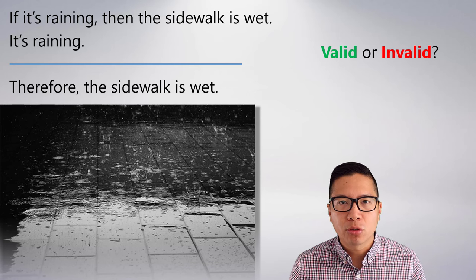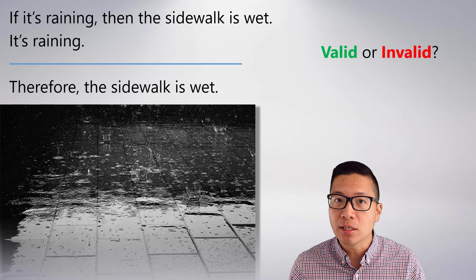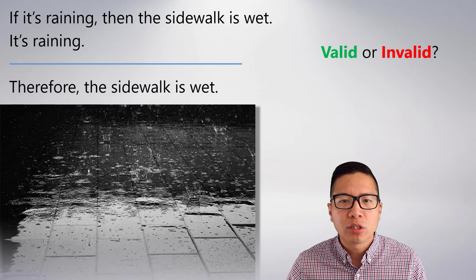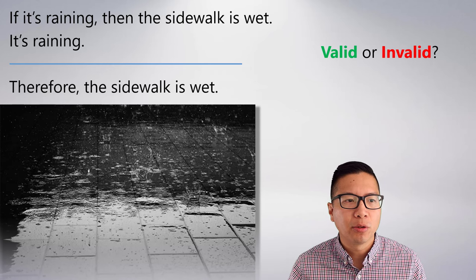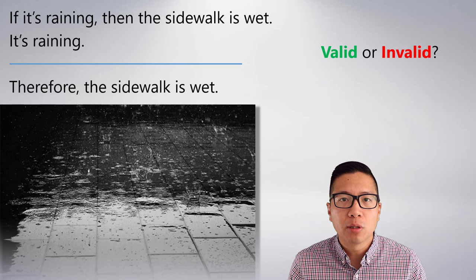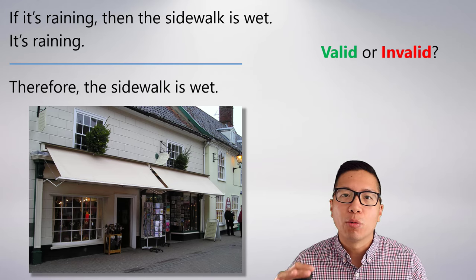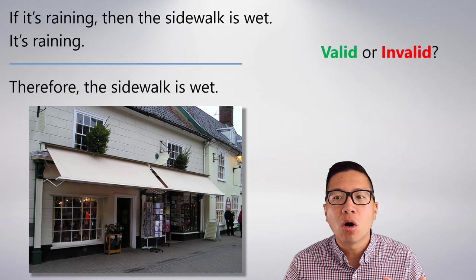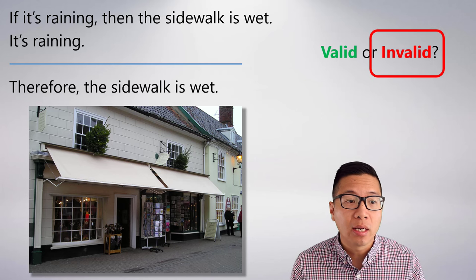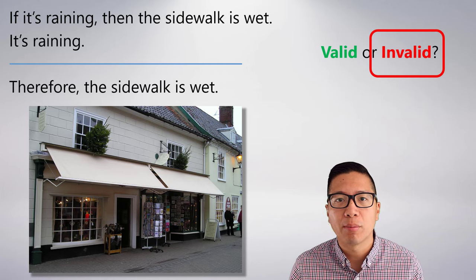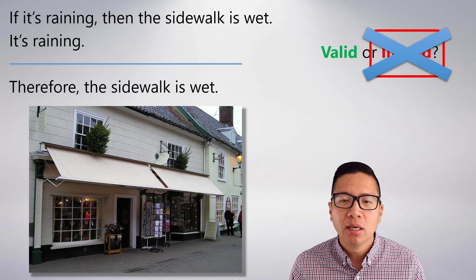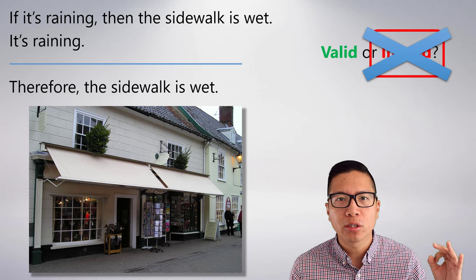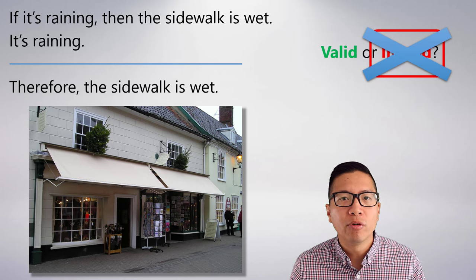Remember, what we're asking is: if the premises are true, does the conclusion have to be true? Or equivalently, is it possible for the premises to be true and the conclusion to be false? A lot of you will start thinking of counterexamples — is it possible that it's raining and the sidewalk isn't wet? Of course it is possible. You've seen stores with a little awning out front so that if it's raining, the sidewalk isn't wet. So naturally it seems that, because of this awning, the argument is invalid. It is possible for it to be raining and the sidewalk to be dry — we've seen that in our lives. Unfortunately, that is not good reasoning, and the argument is actually not invalid.